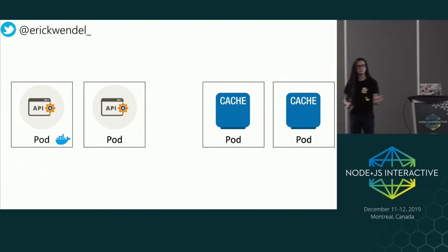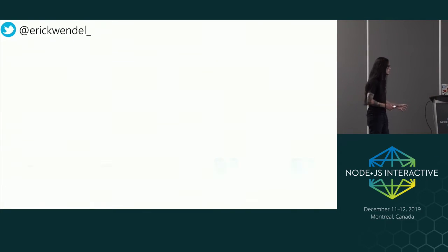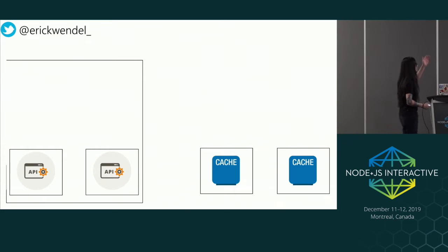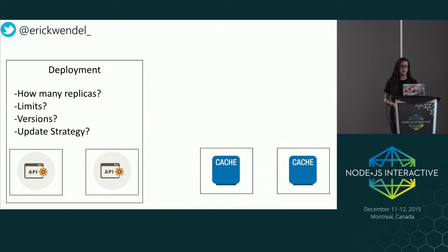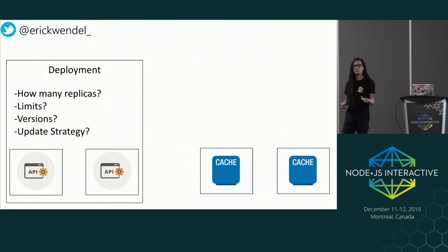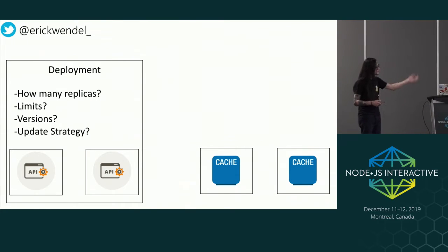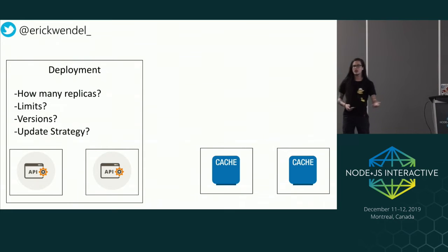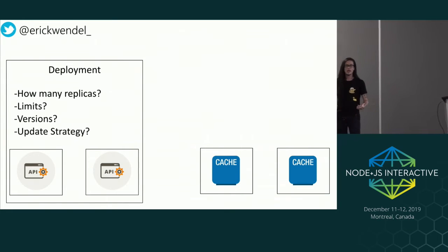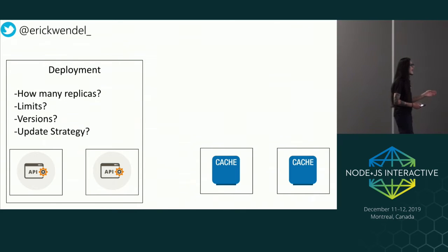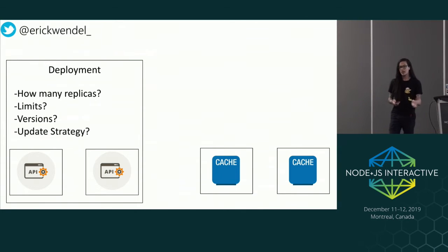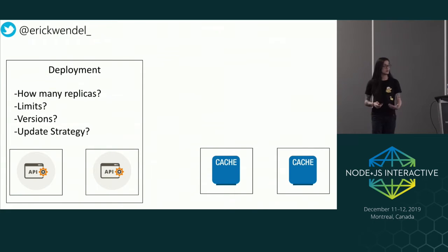Now we talk about deployment. Deployment will specify how many replicas, how many copies we will have of this project, what are the limits — how much memory or CPU your application would use — and versions. You can deploy version one and version two at the same time and expose them differently, and define how you will update or share the project with consumers.